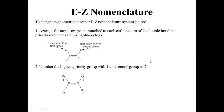Now the E/Z nomenclature. To designate geometrical isomers, the E/Z nomenclature system is used. The first rule is to arrange the atoms or groups attached to each carbon atom of the double bond in a priority sequence — that is, for every double-bond carbon, rank the groups attached to that carbon.